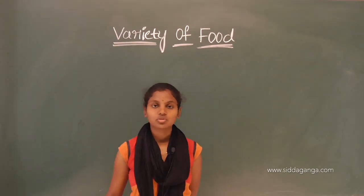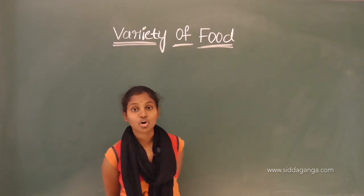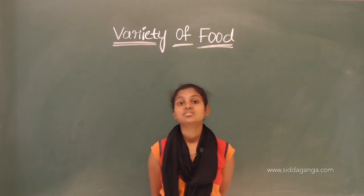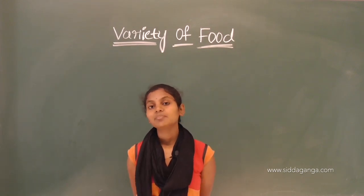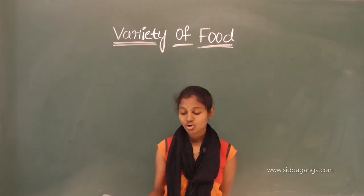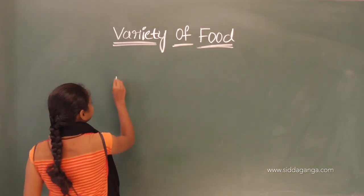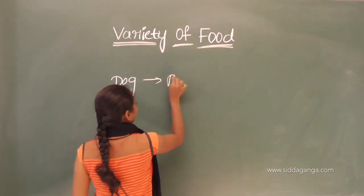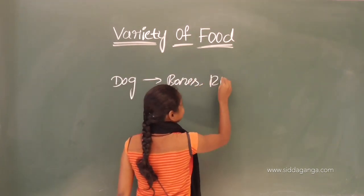First one is dog. What can a dog eat? Dog can eat bones, rice, and also rotis. So it can eat both vegetarian and non-vegetarian food. Dog can eat both.